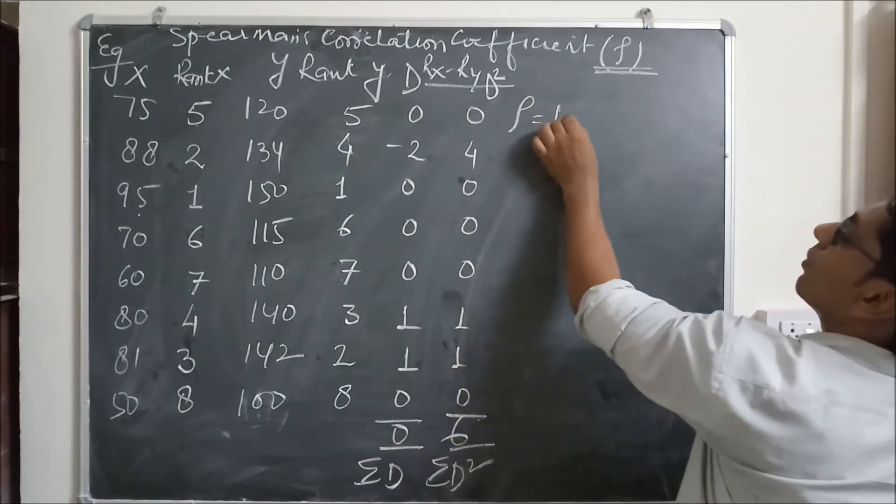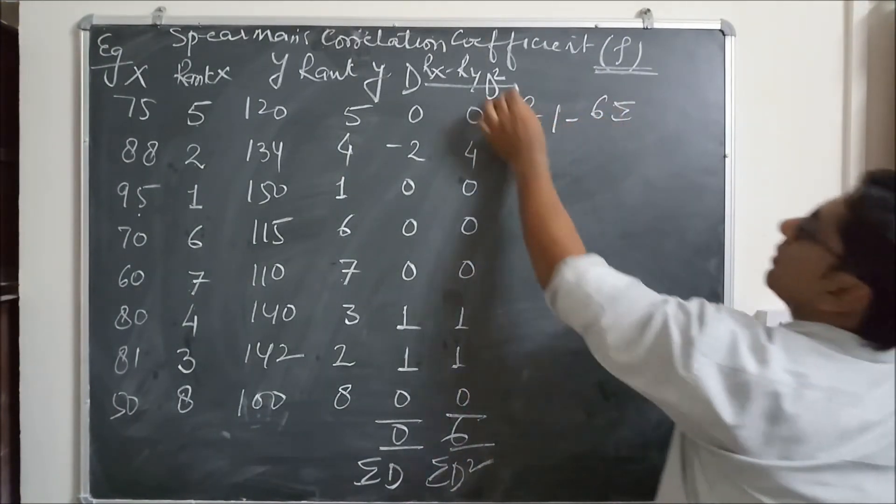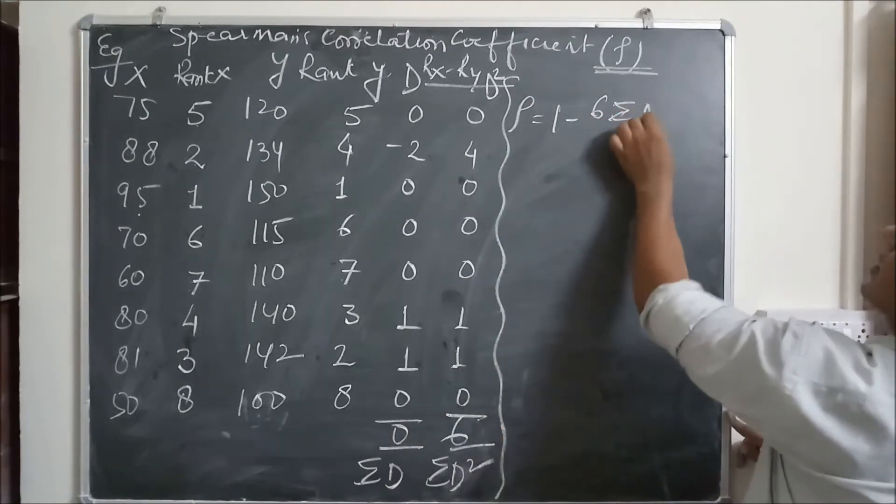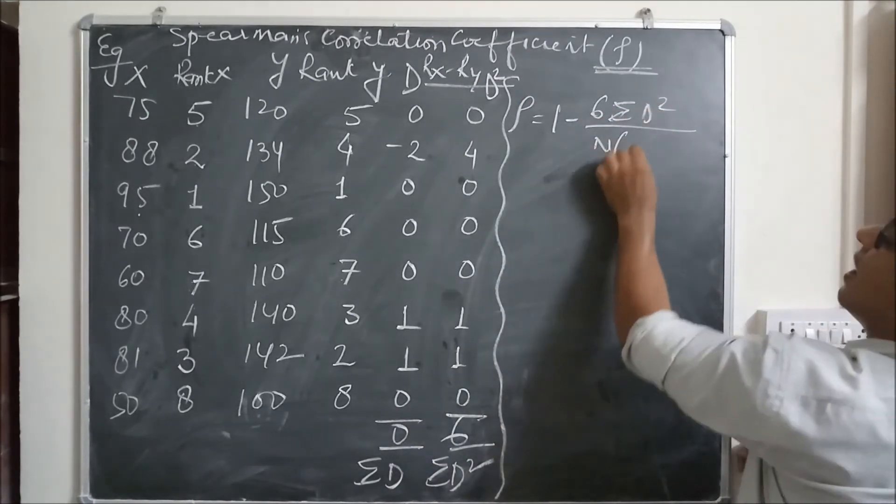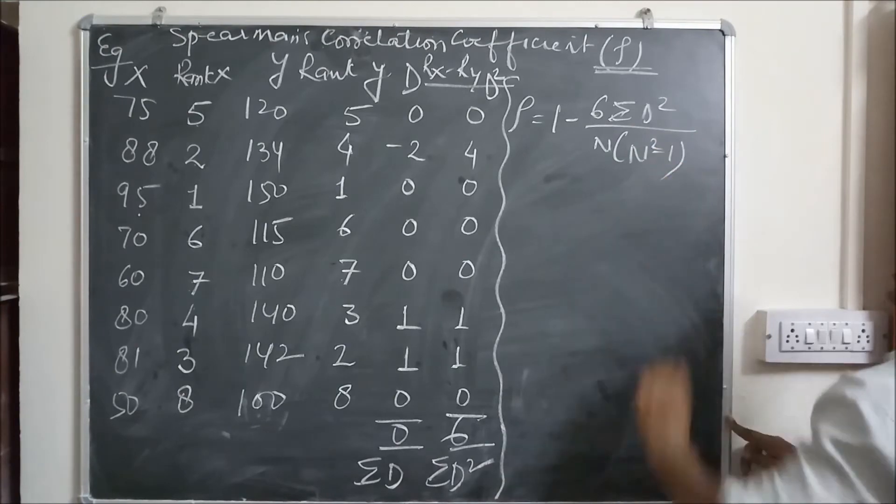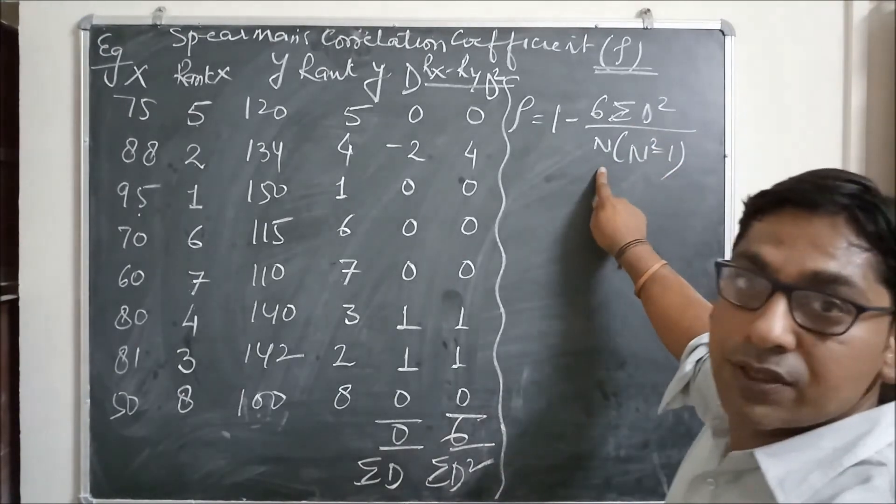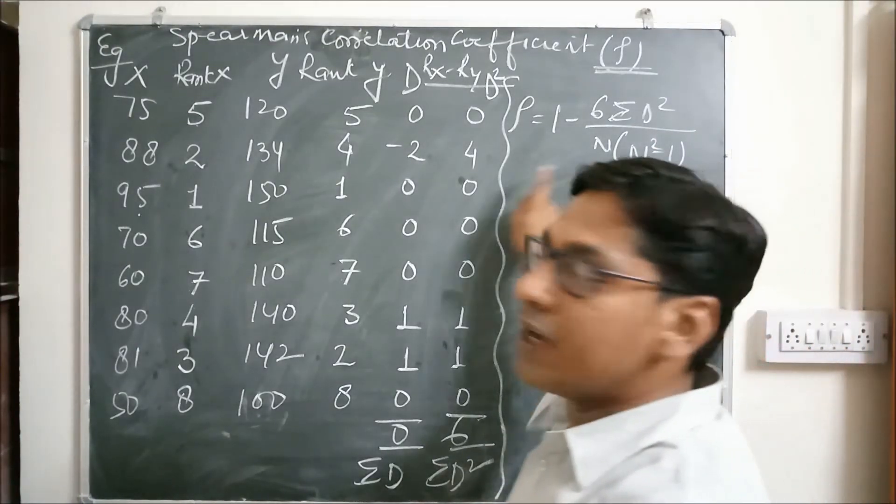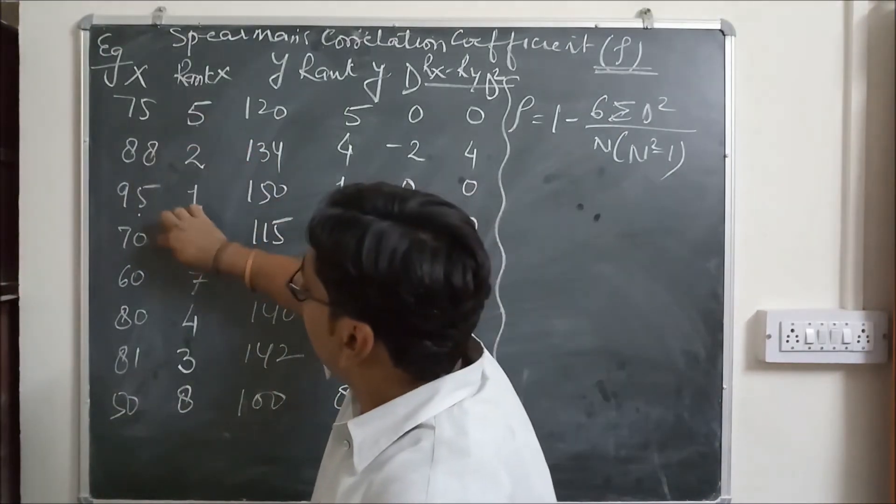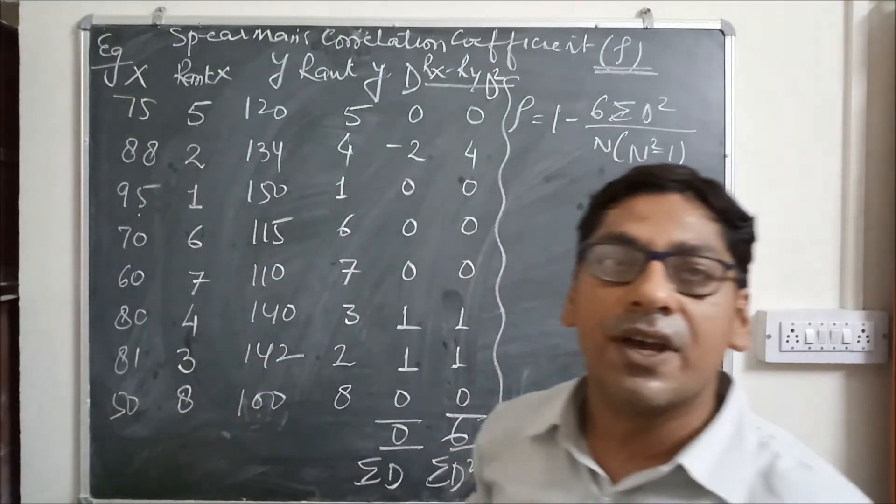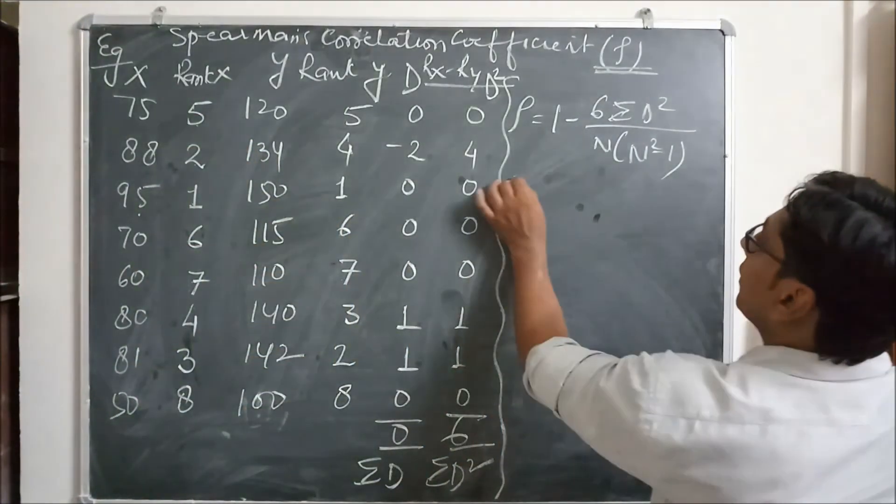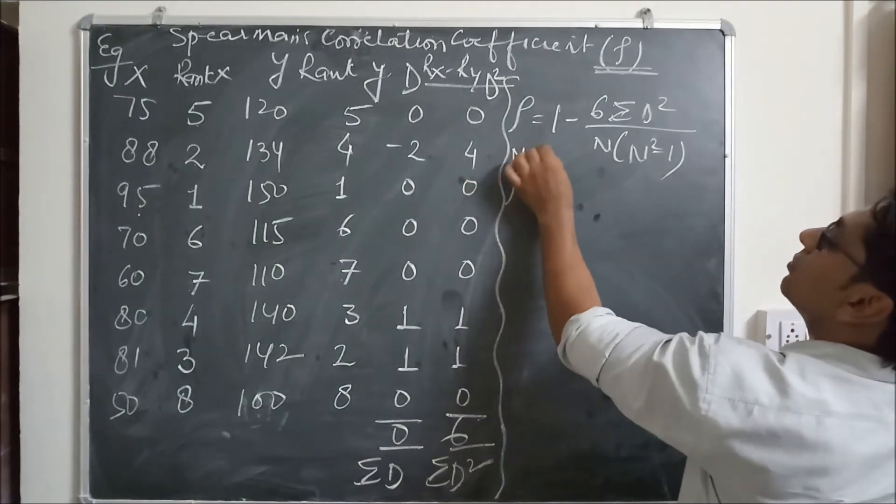Now we use formula. Sigma D square upon N, N square minus 1. As we know, N means the total number of items. So here we find there are 8 items. N equals to 8.